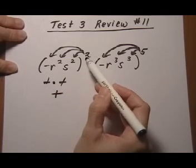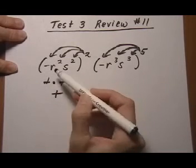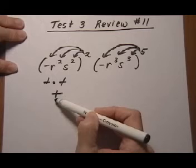Any time you have an even exponent on the outside, the negative signs are going to cancel out, and you'll always get a positive.